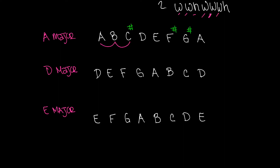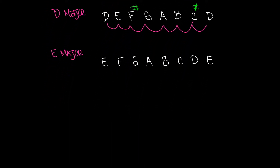Now let's do D major a bit quicker. D to E — whole step, yes. E to F — not a whole step, so we put a sharp on F. F sharp to G — is that a half step? Yes. G to A — whole step, yes. A to B — whole step, yes. B to C — not a whole step, so we put a sharp on C. C sharp to D — half step, yes. D major is built properly.